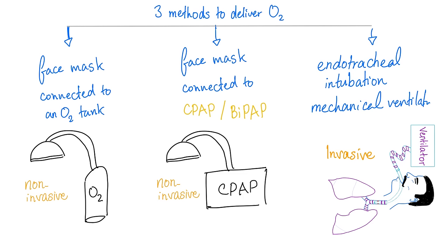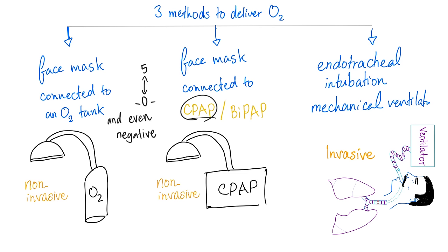Next, face mask but instead of being connected to an oxygen tank, now it's connected to CPAP or BiPAP — an actual machine that can pump oxygen into you. Why do we call it continuous positive airway pressure? Because normally your intra-alveolar pressure drops to zero. This CPAP will never let that happen because it can collapse your alveoli. It will keep it at, let's say, five — so it can never get below five.